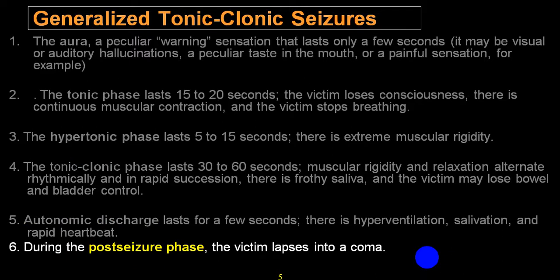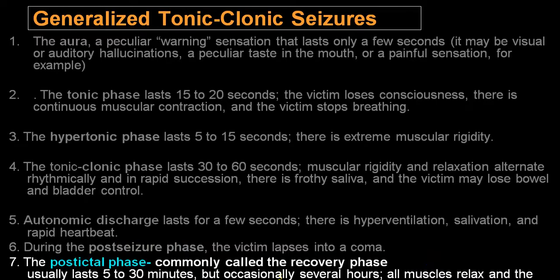In the post-ictal phase, the person will still be drowsy, with disorientation, confusion, and complaints of severe headache and body ache. The post-ictal phase will last from 5 minutes up to 30 minutes, by and large with complete recovery. But if the person gets continuous episodes without recovering — going into a second episode of tonic phase — and if it persists for more than 30 minutes, we usually label that as status epilepticus. However, if the tonic-clonic phase lasts for more than 10 minutes, it should be treated as status epilepticus.